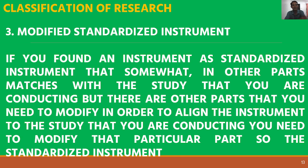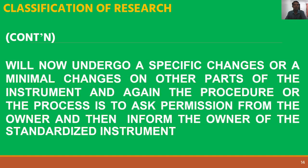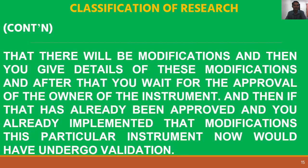Number three is the modified standardized instrument. This means that if you found a standardized instrument that partially matches your study but there are parts you need to modify to align it to your research, you may modify those parts. The standardized instrument will undergo specific or minimal changes. The process is to ask permission from the owner, inform the owner of the modifications, give details of those modifications, wait for approval, and then after implementing the modifications, the instrument will undergo validation.